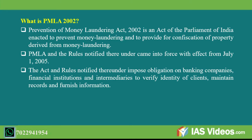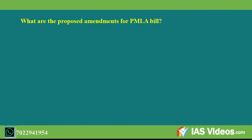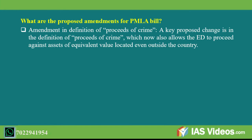The act and rules notified thereunder impose obligations on banking companies, financial institutions, and intermediaries to verify the identity of clients, maintain records, and furnish information. What are the proposed amendments for the PMLA bill? A key proposed change is in the definition of proceeds of crime.